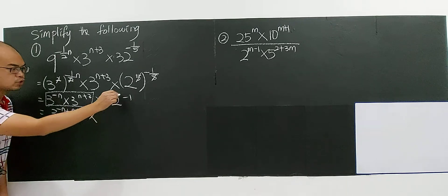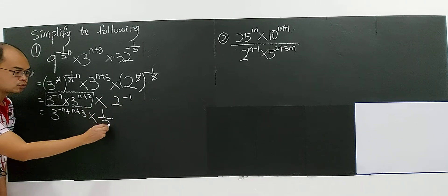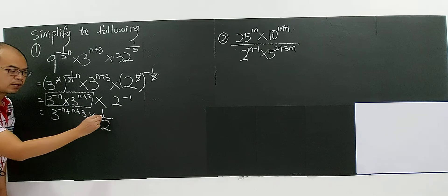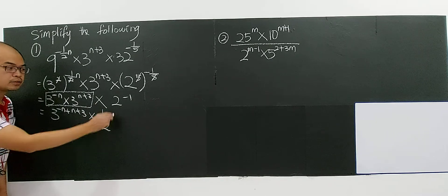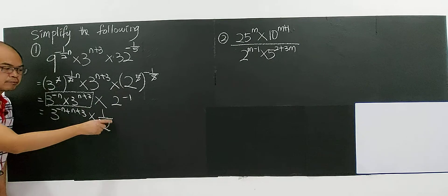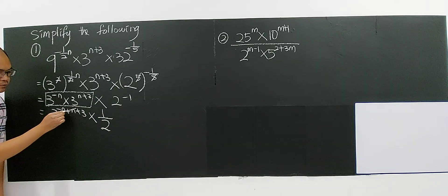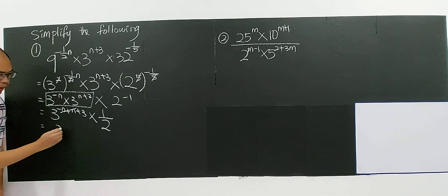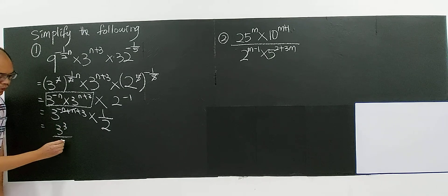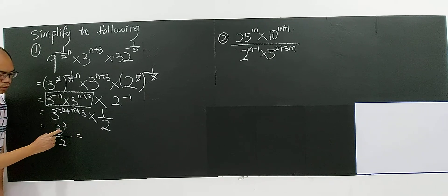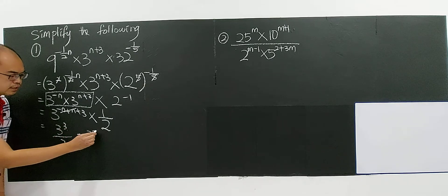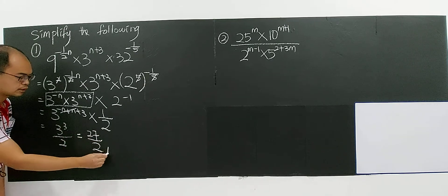Then it multiply with 2 to the power of negative 1 is 1 over 2 to the power of 1. 1 over A to the power of N, you will become A to the power of negative N. So you can bring it down and become positive. So negative N plus N, you have 0. So you have 3 to the power of 3 divided by 2, which gives you 3 to the power of 3, you have 27 over 2. Yes, this is it.